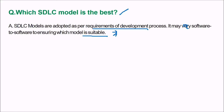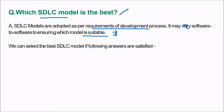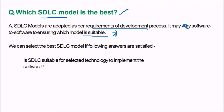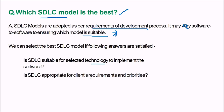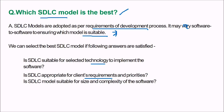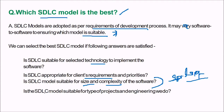Determining which model is suitable is the task of the software manager. We can select the best SDLC model if the following are satisfied: Is SDLC suitable for the selected technology? Is it appropriate for the client's requirements and priorities? Is the SDLC model suitable for the size and complexity of the software? For high size and complexity, you need to go to spiral or models that handle large and complex software. Is the model suitable for the type of project and the geographically co-located or dispersed developer?